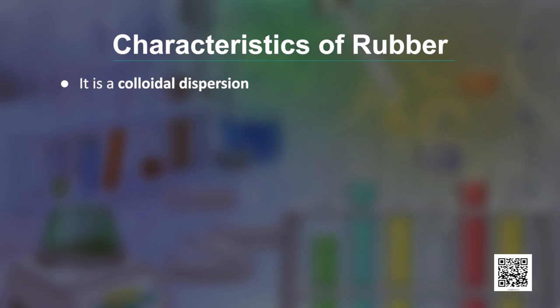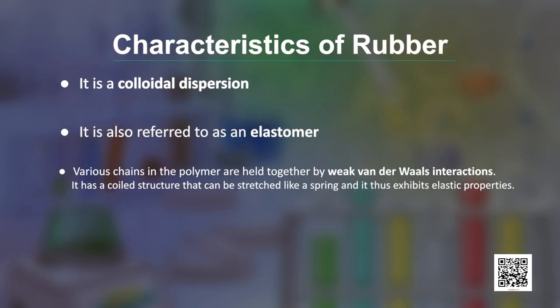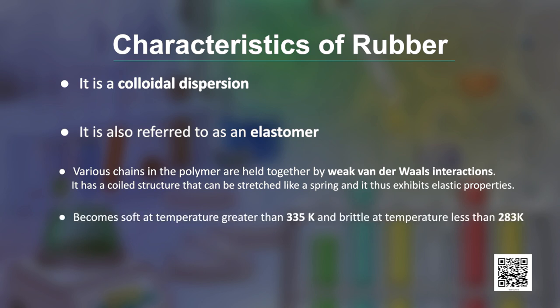Natural rubber is a colloidal dispersion and is also referred to as an elastomer. The various chains in the polymer are held together by weak Van der Waals interactions. As a result, it has a coiled structure that can be stretched like a spring and thus exhibits elastic properties.